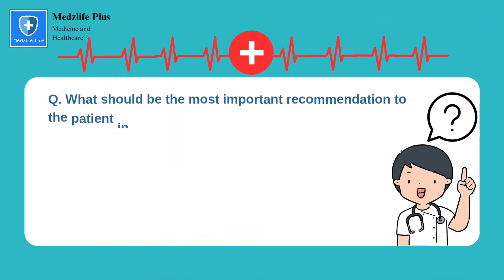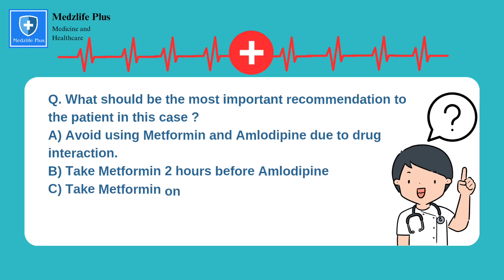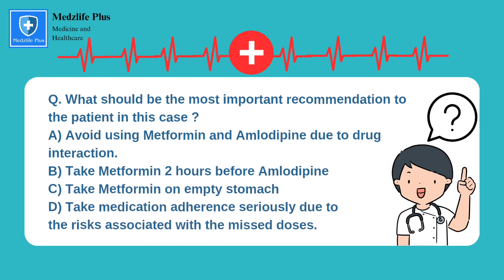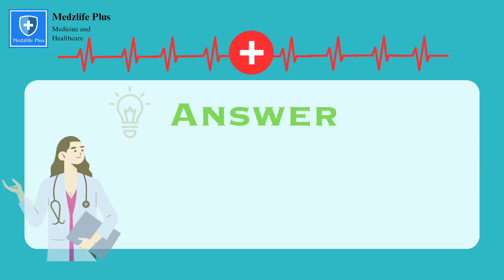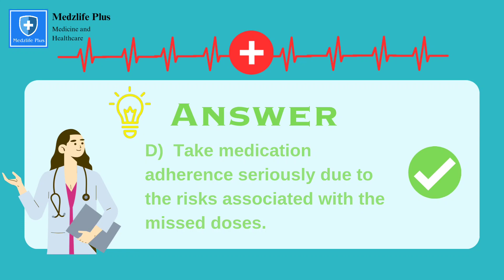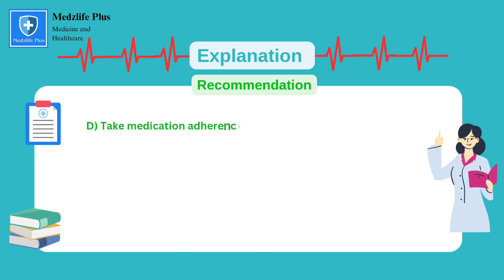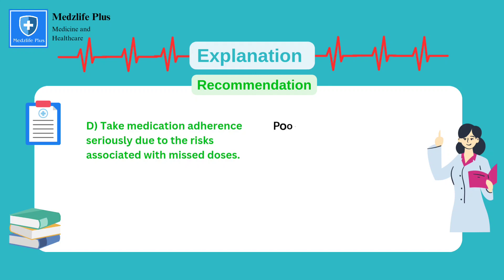Question number 5: what should be the most important recommendation to the patient in this case? A. Avoid using metformin and amlodipine due to drug interaction. B. Take metformin 2 hours before amlodipine. C. Take metformin on empty stomach. D. Take medication adherence seriously due to the risks associated with missed doses. The right option is D. Medication adherence is crucial for managing both hypertension and diabetes effectively. Missing doses of amlodipine or metformin can lead to uncontrolled blood pressure and blood glucose levels, increasing the risk of complications. Consistent and timely adherence to prescribed medications is vital to achieve and maintain target blood pressure and glycemic control.